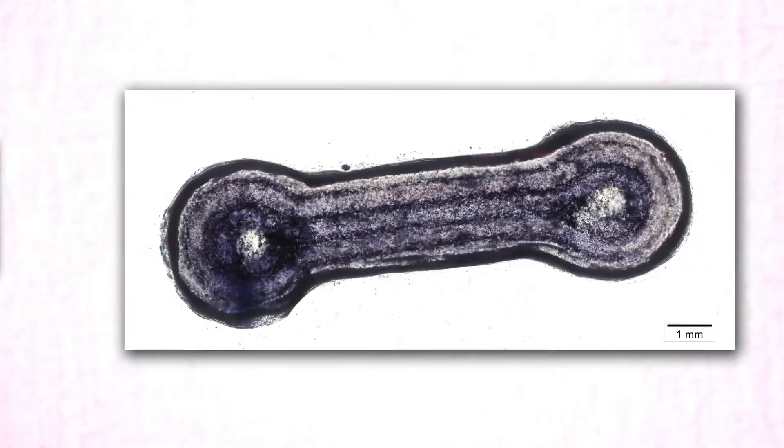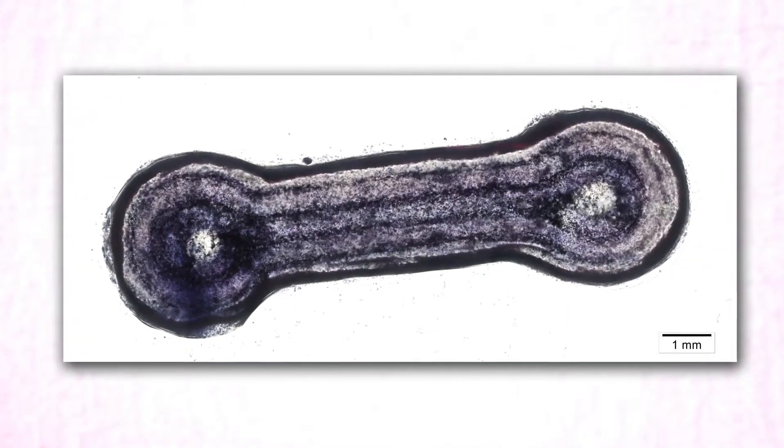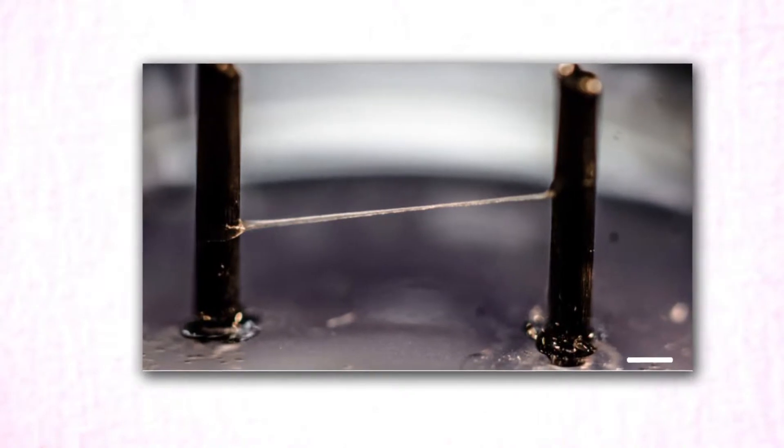So in contrast to the classical 2D cultures where cells grow crisscrossed, we will be able to do mini organs with aligned cells, mini skeletal muscles and mini tendons that help us in drug discovery and development.